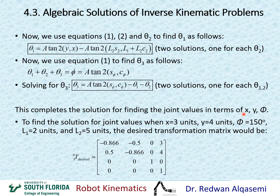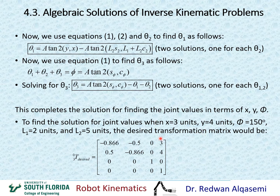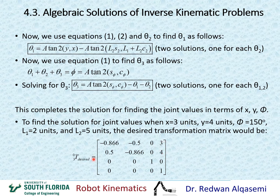For the next part, we substitute the specific values: X = 3, Y = 4, phi = 150 degrees, L1 = 2 units, and L2 = 5 units. Substituting phi = 150° into the desired transformation matrix gives us numerical entries for cosine(phi), sine(phi), X, and Y. Now we need to evaluate theta1, theta2, and theta3 using these numbers.